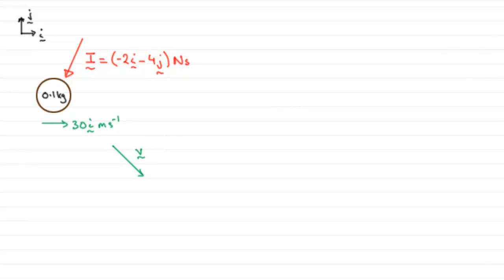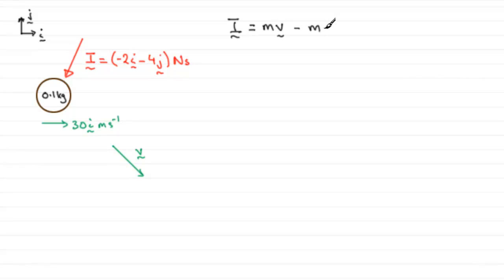How do we do this? Well, you should be familiar with the formula that impulse, which I've called I here, is equal to change in momentum — the final momentum mv minus the initial momentum mu. And we're dealing with vector quantities, so I've put squiggly lines under those vector quantities.